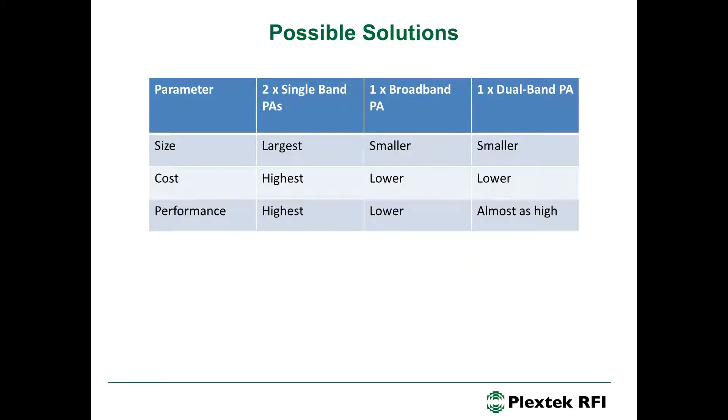So, let's look at some possible solutions to implement this specification. The first and most obvious is to have two single-band power amplifiers, which would be the largest solution in terms of size, and also would give you the highest cost, but should provide the highest performance. If we wanted to go for a smaller solution, we could consider a single broadband power amplifier, which would be smaller and have an expected lower cost. But, due to the large bandwidth that it has to cover, about 32%, we would expect the performance to also be lower than implementing two dedicated single-band PAs.